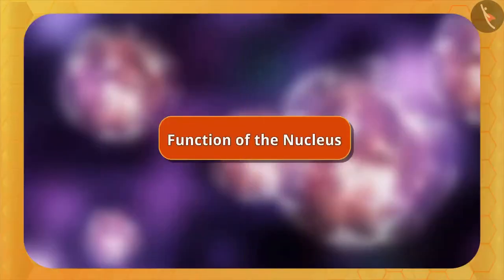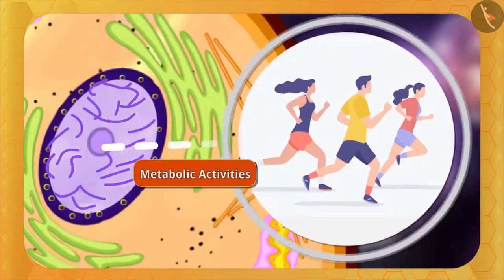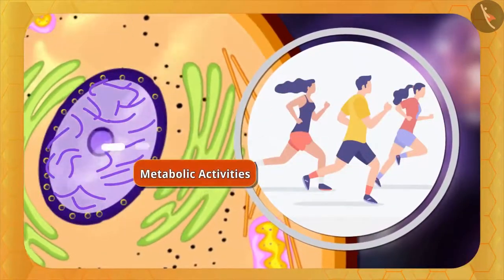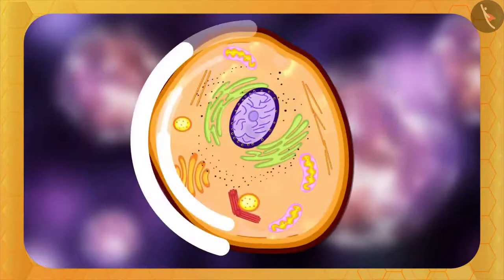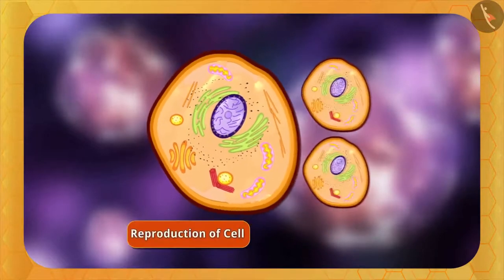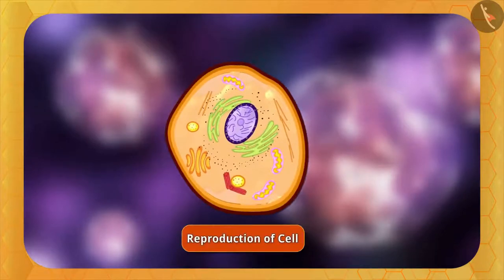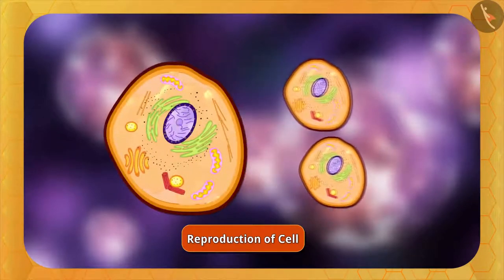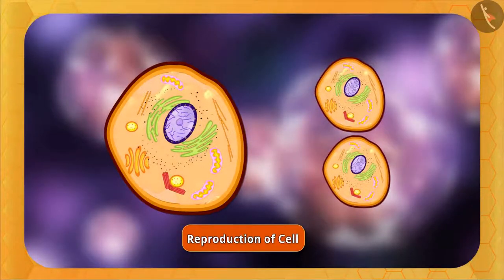The nucleus is the headquarters that controls and directs all metabolic activities such as production of energy, etc. It determines the overall growth and maturity of the cell and plays a central role in cellular reproduction. Do cells also reproduce? Yes — reproduction occurs in cells as well. One cell divides into two new cells, and the information and instructions in the new cell formed by cell reproduction are passed through the nucleus.